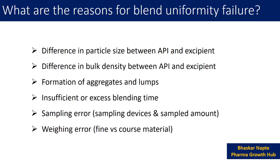The last reason is weighing error. Whenever you collect a blend sample for analysis, it is very important that you do not partially weigh the sample. If you transfer the sample from a glass container onto butter paper and try to weigh exactly 100 milligrams, segregation can happen during this weighing process — especially if your blend contains coarse material and fine particles — and this will lead to a non-homogeneous blend result.